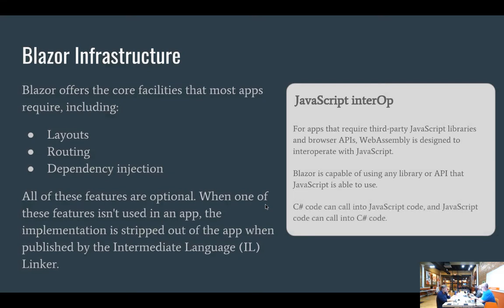You can call any library or API that JavaScript can call. With C# you can call into JavaScript code, or with JavaScript you can call into C#. So if you're coding in a Razor function and you need something that currently isn't possible in C#, you can call into jQuery and pass back and forth. That opens up a lot of possibilities.